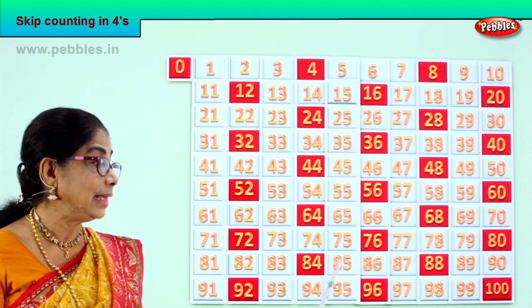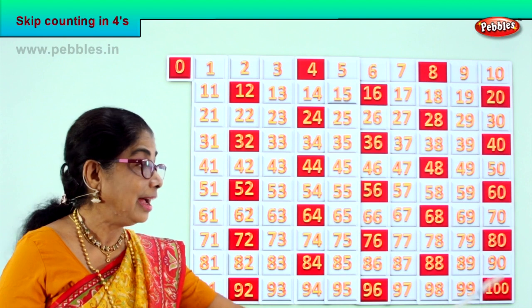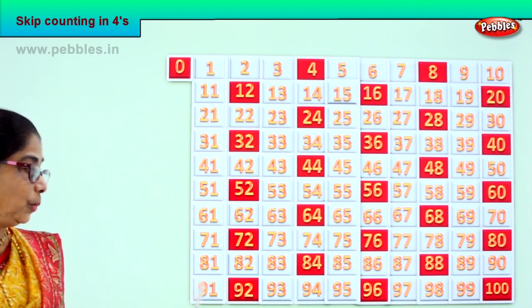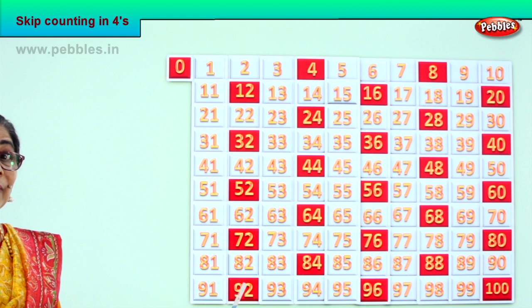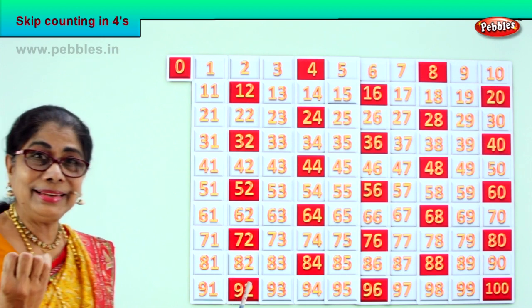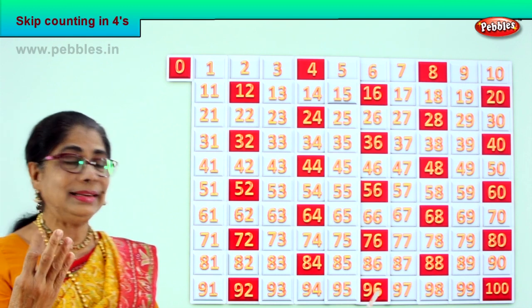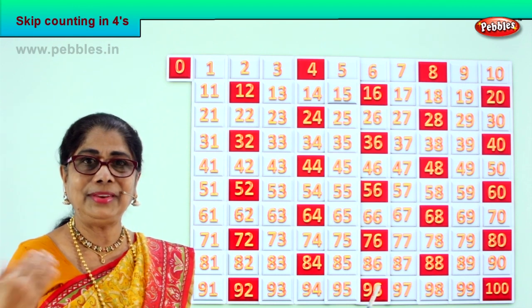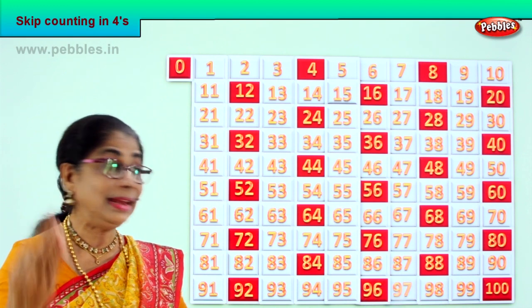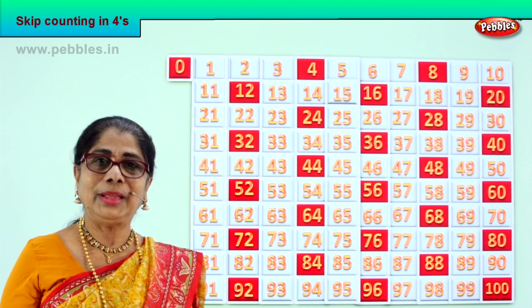After 84: 85, 86, 87, 88. After 88: 89, 90, 91, 92. After 92: 93, 94, 95, 96. After 96: 97, 98, 99, 100.